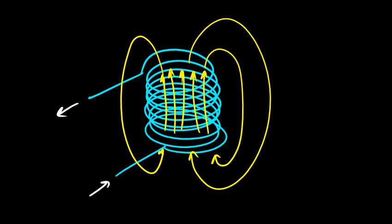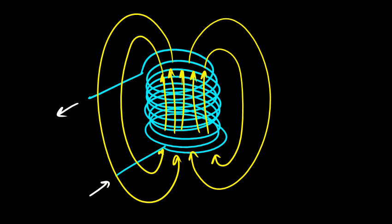This is very much like the magnetic field around a bar magnet, and this essentially is a magnet. You end up with a magnetic north pole at one end and a south pole at the other, and this is what you would call an electromagnet — a magnet made from electric current.